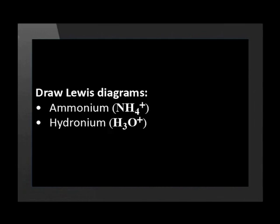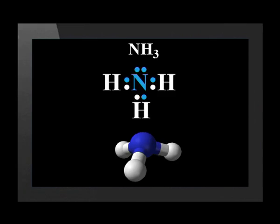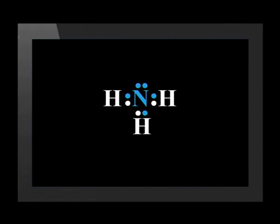We've already seen the Lewis structure for the ammonia molecule. Notice that ammonia has three pairs of electrons which are shared between two nuclei, nitrogen and hydrogen. These are called bonded pairs. Ammonia also has one pair of electrons which belongs only to nitrogen. This is called a lone pair.